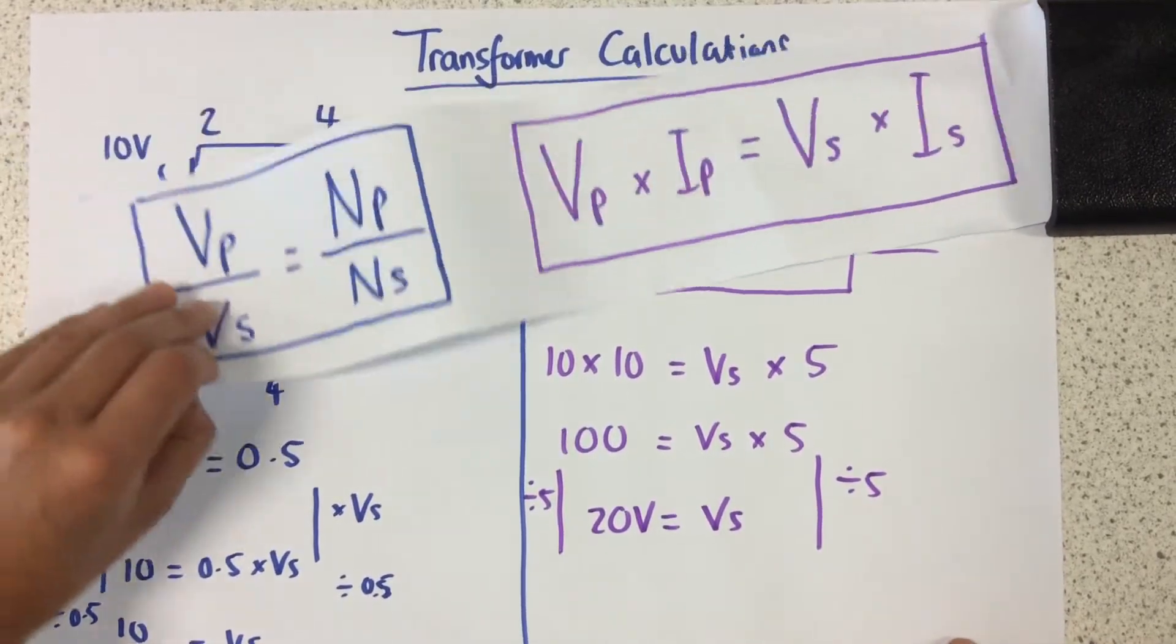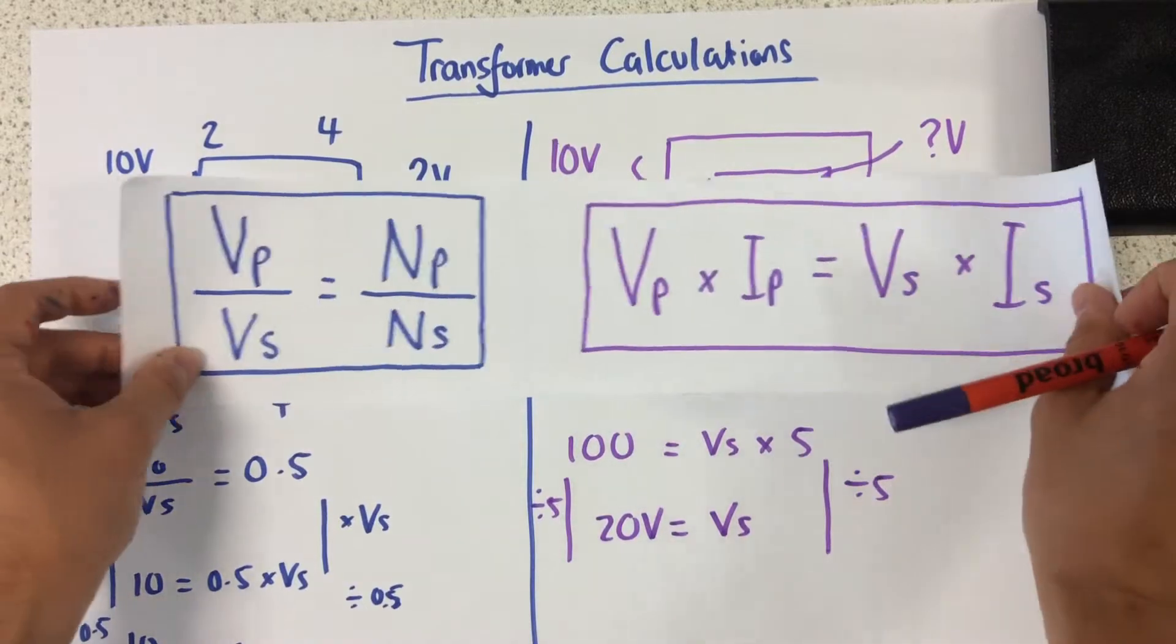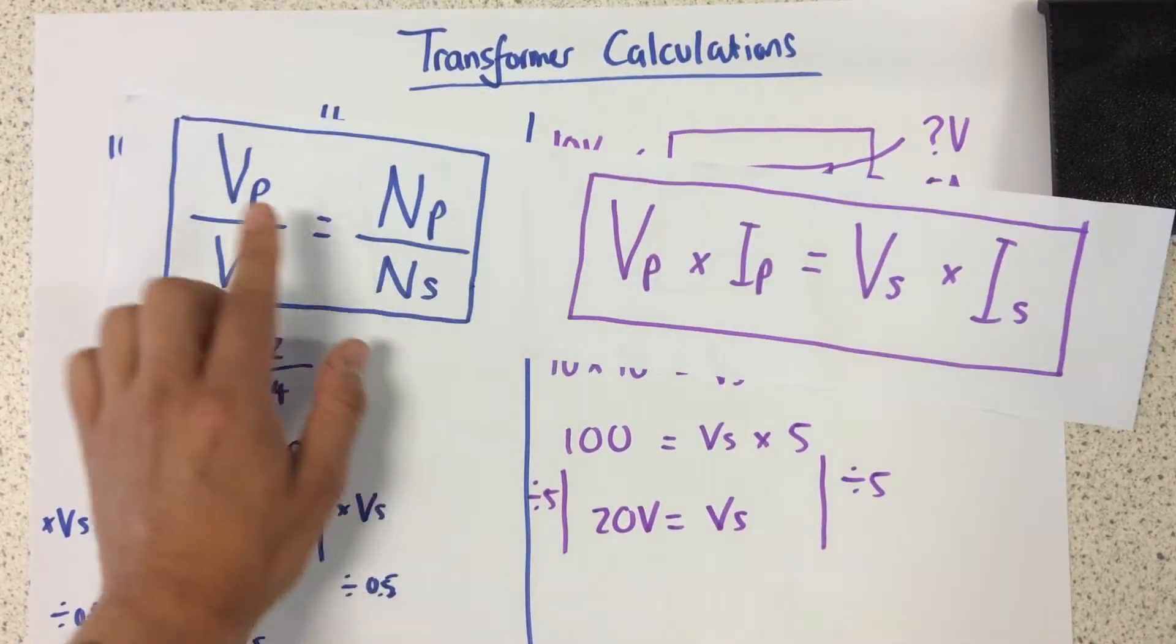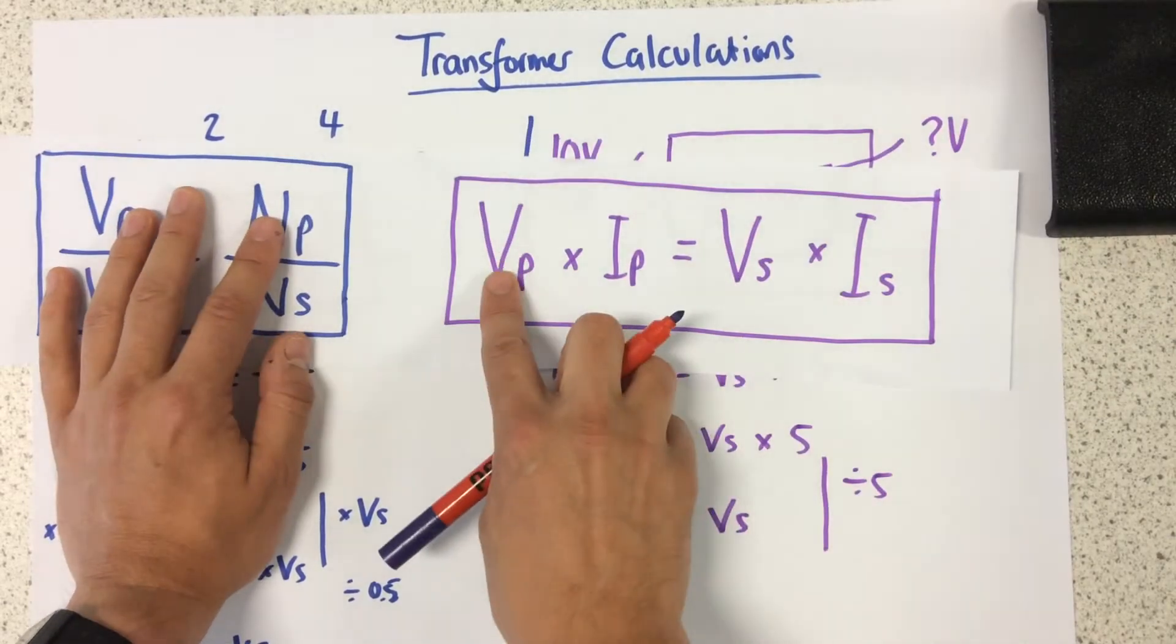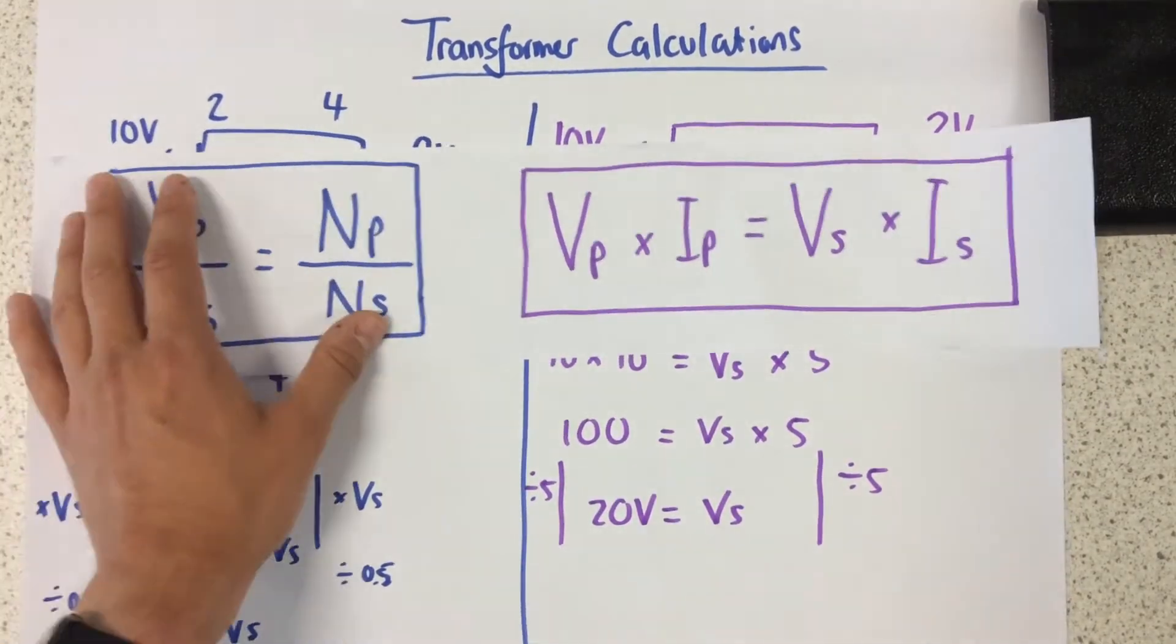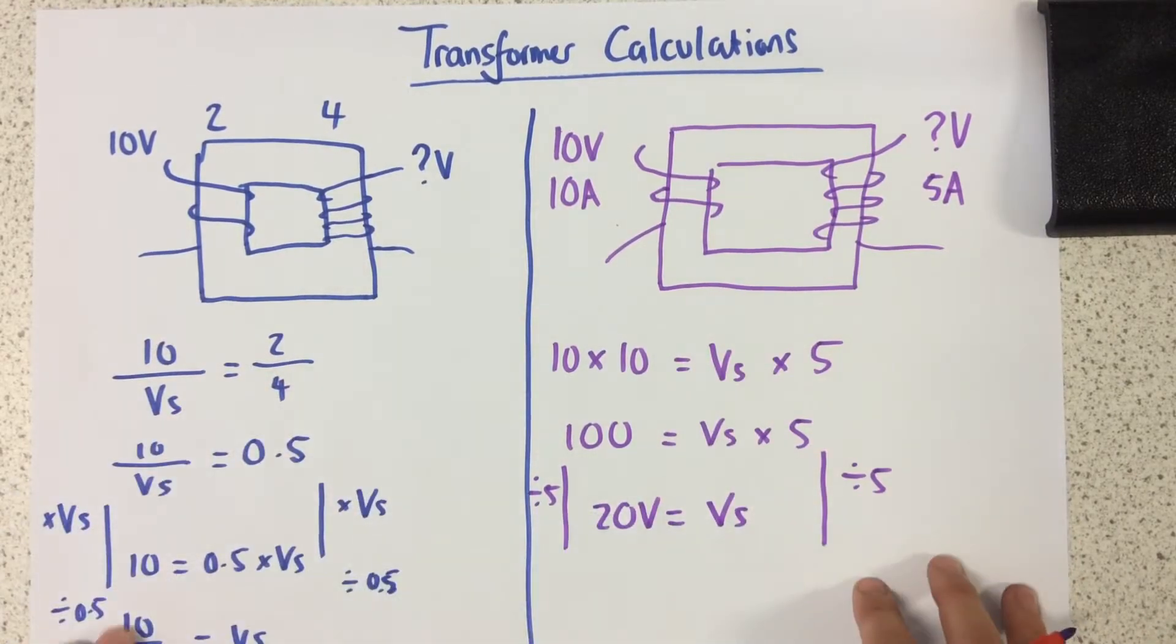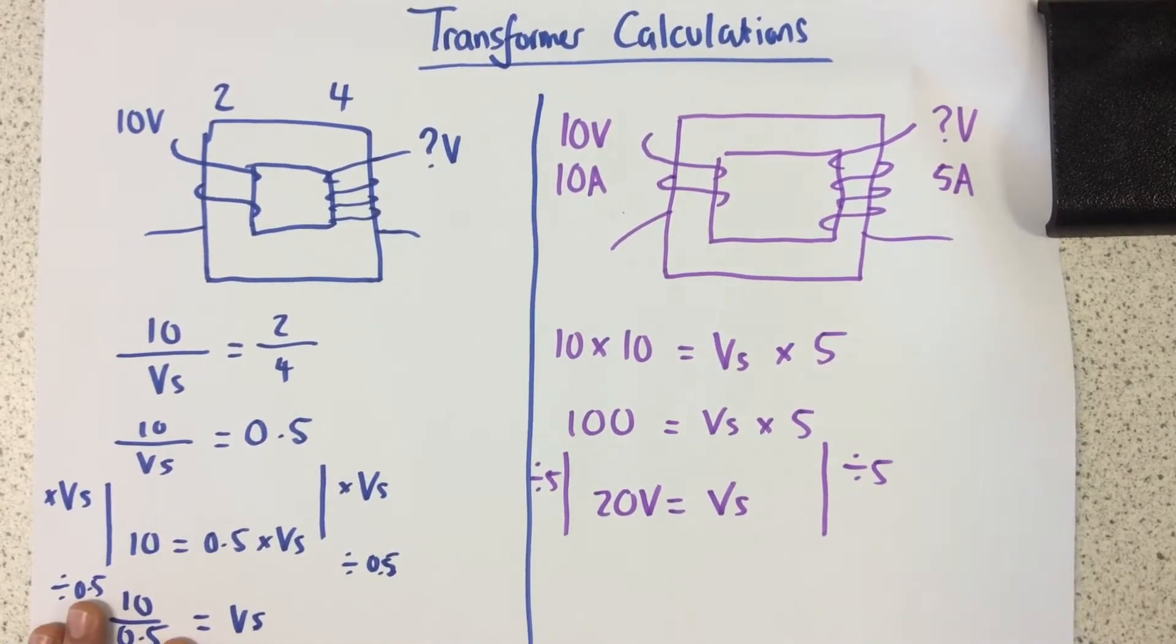So when I'm doing transformer calculations, all I need to do, pick the right equation, depending on whether I know the number of turns and the voltage, or whether I'm dealing with the voltage and the current. So then what I need to do is I substitute the numbers in, and then merely rearrange them in order to calculate.